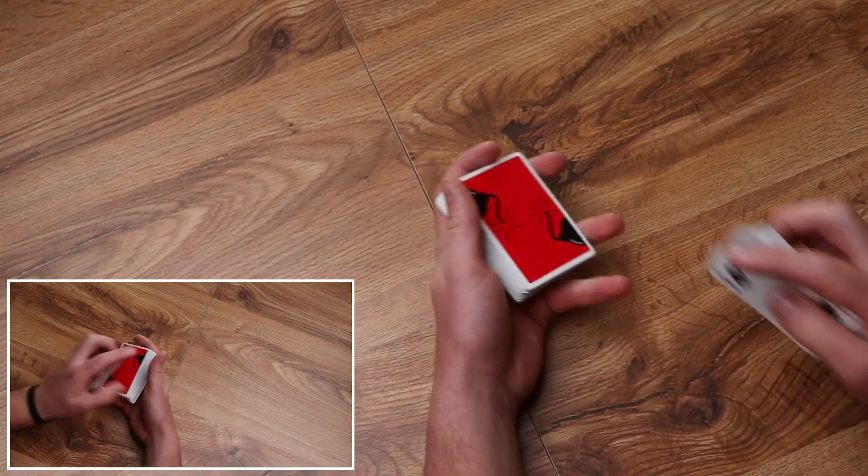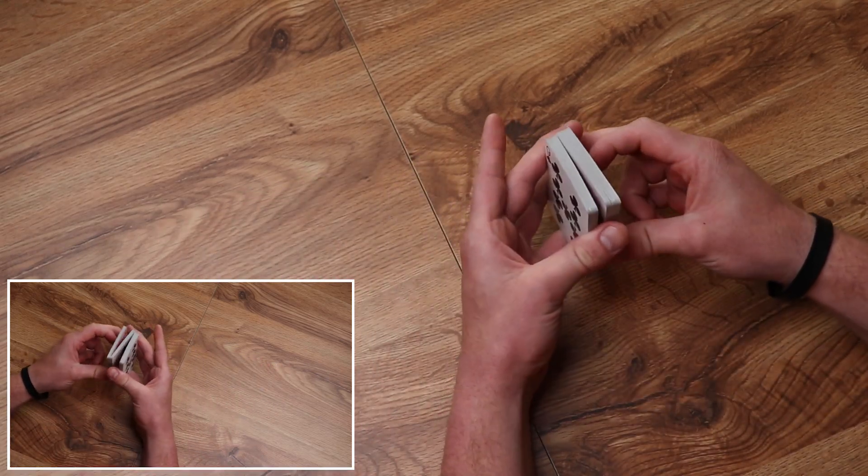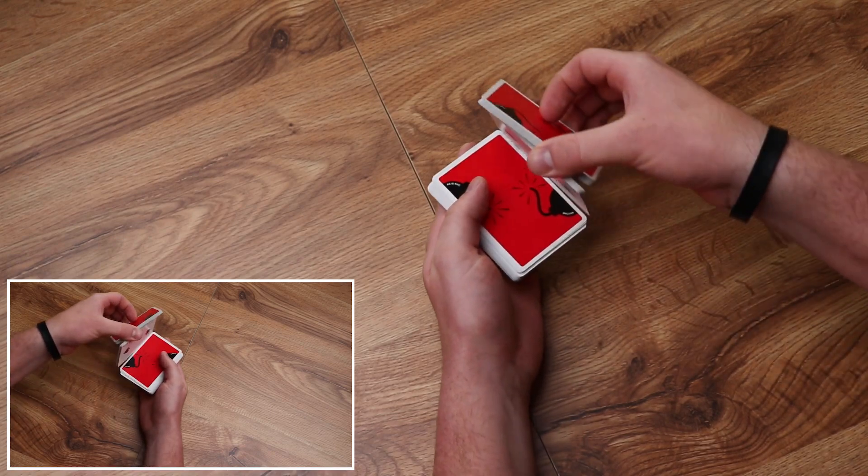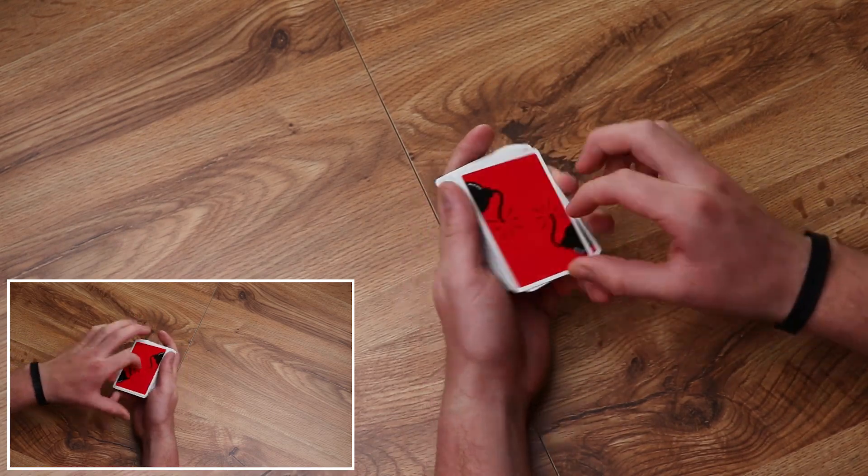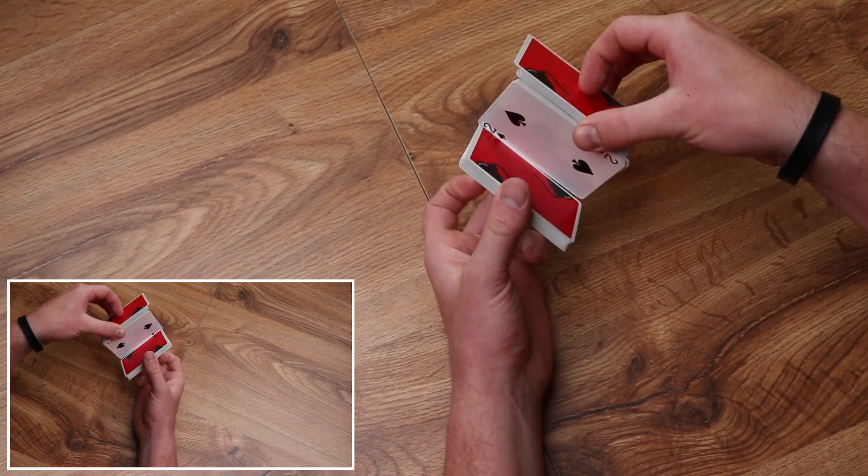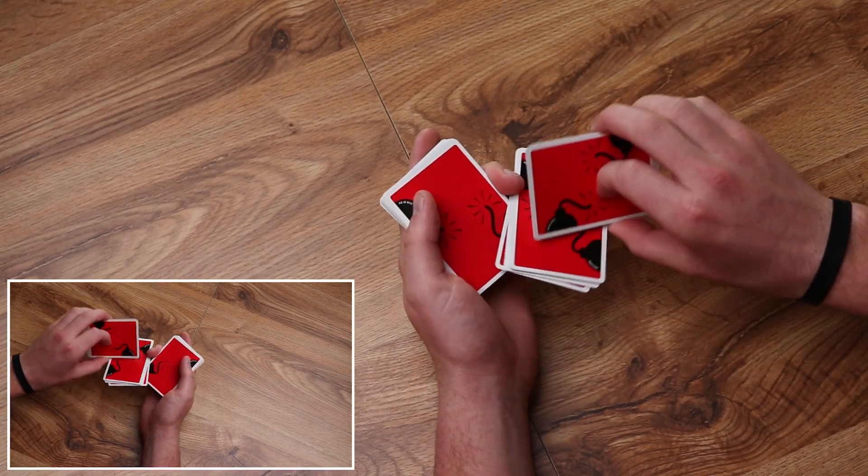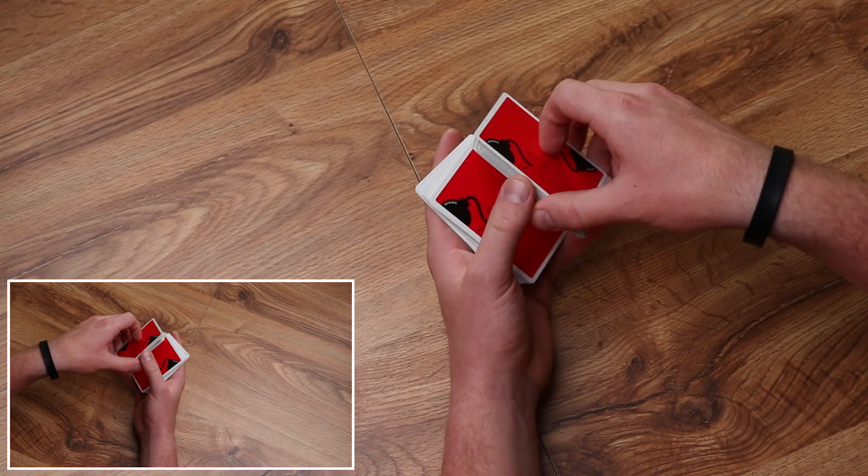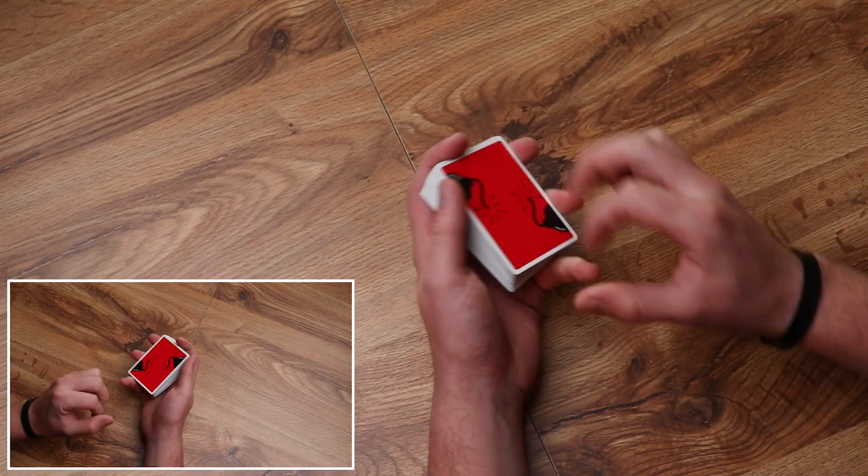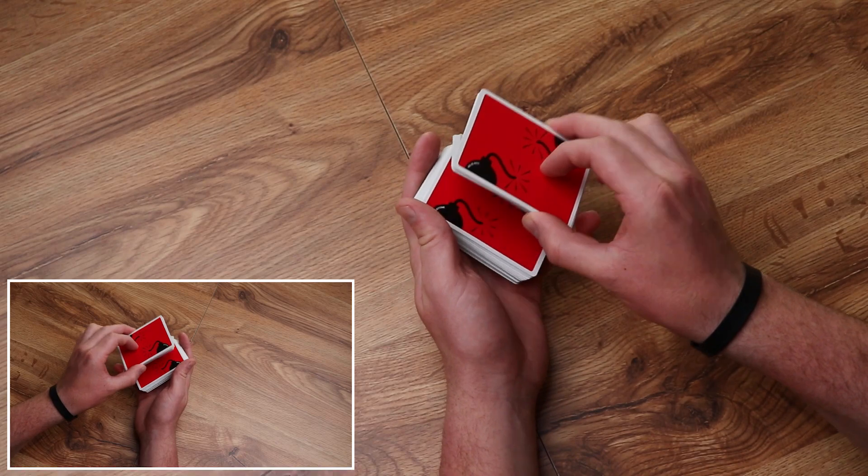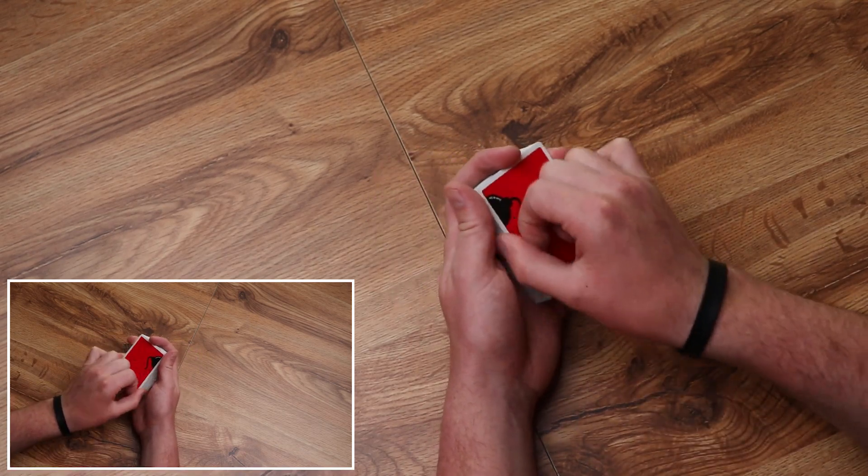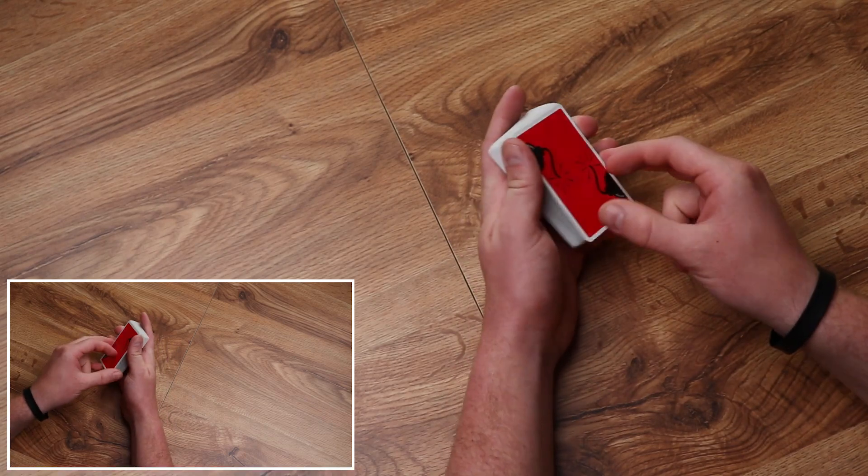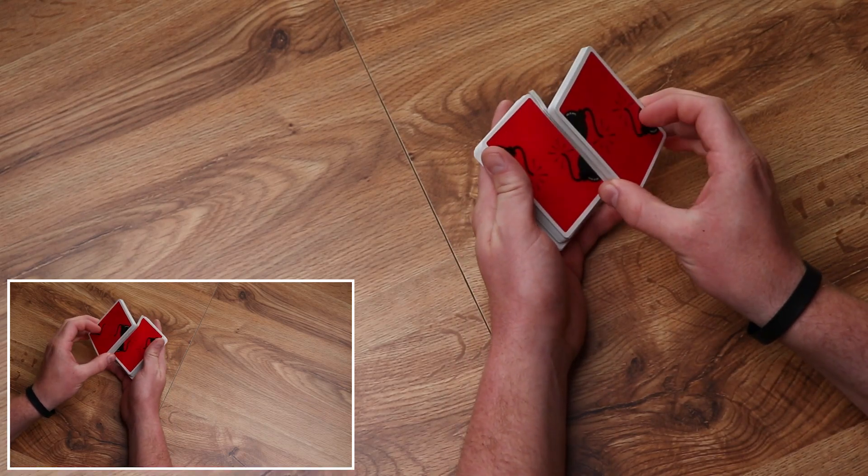What happens is on this side, you're going to lift the thumb up so that it's just touching the middle. This is so weird to do without the packet there. Let's figure this out together. You're going to lift it up like this. The ring finger and the pinky are going to get out of the way.